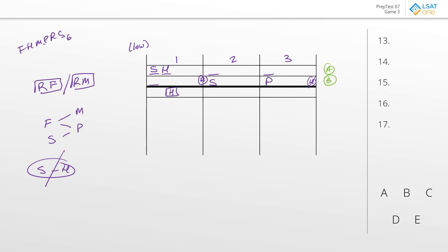H will go in aisle one and be alone. S will go in aisle two, P will go in aisle three. If aisle one is done, then F before M and P forces F into two and M into three. That just leaves R, which can shuffle — R has to go with one of F or M. The question asks what could happen. Answer choice A: F in three — definitely not. M in two — nope. P in two — nope. R in three — we said R could bounce between two and three, so that could be the case. S in three — definitely not. The best answer is D for question 13.